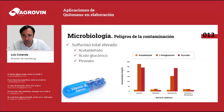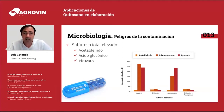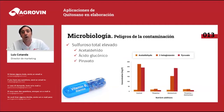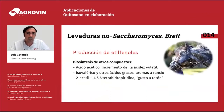In terms of thiamine, or vitamin B1, this is necessary for microorganisms to produce energy. The autochthonous flora coming in with the grapes consumes thiamine very quickly, and therefore this thiamine is not available for Saccharomyces cerevisiae. It is also not available for binding pyruvate and acetaldehyde, and therefore the preservation of the wine with sulfur dioxide is going to be complicated.